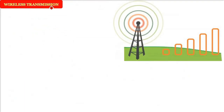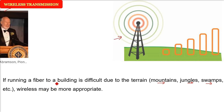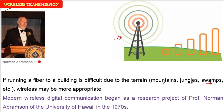Wireless transmission means no wire, fiber, or coaxial cable — just sending and receiving data as waveforms. When terrain is difficult — mountains, jungle, swamps — wireless is the best option. Modern wireless digital communication began with a research project by Professor Norman Abramson of the University of Hawaii in the 1970s.